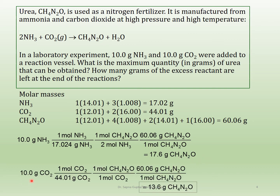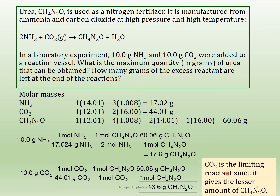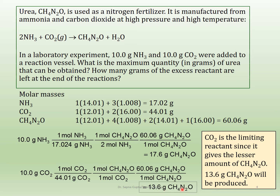Then do the same setup for carbon dioxide: 10 grams of CO2, convert to moles using the formula mass, apply the mole ratio (1 mol urea from 1 mol CO2 per the balanced equation), then convert to grams of urea — giving 13.6 grams. Comparing the two: 17.6 grams from ammonia versus 13.6 grams from carbon dioxide. Carbon dioxide gives less urea, therefore carbon dioxide is our limiting reagent. The answer to part one is 13.6 grams of urea will be produced.